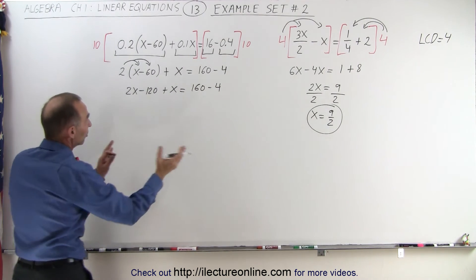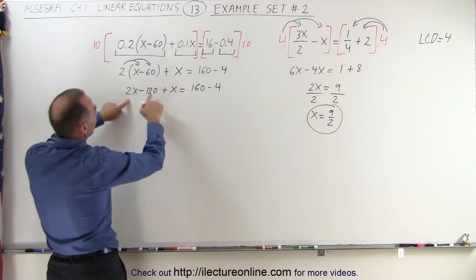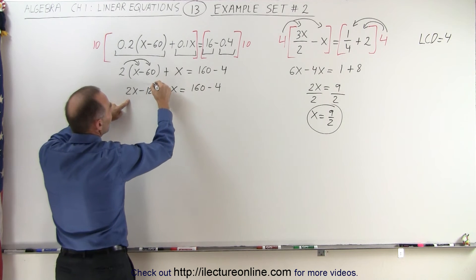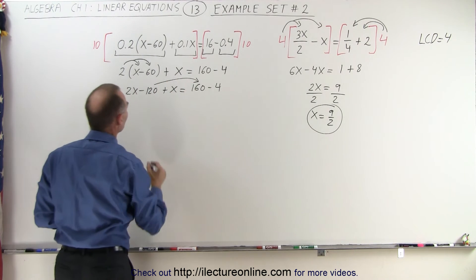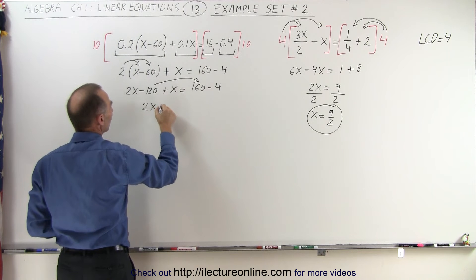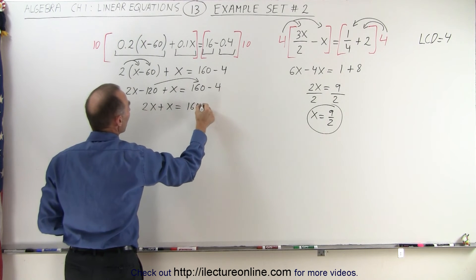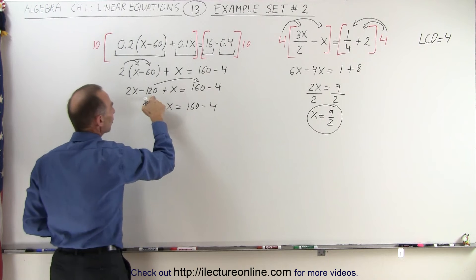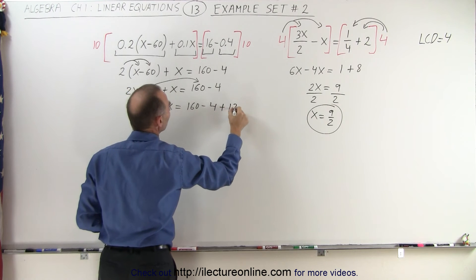Next, I want all the terms with the x on the left side, they're already there, but the term here that doesn't have an x needs to move to the right side. So it gives me 2x plus x is equal to 160 minus 4, and the minus 120 becomes plus 120.